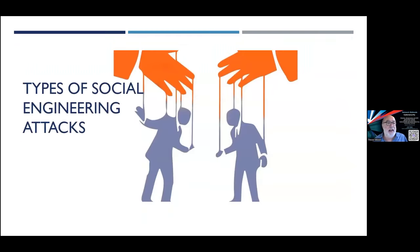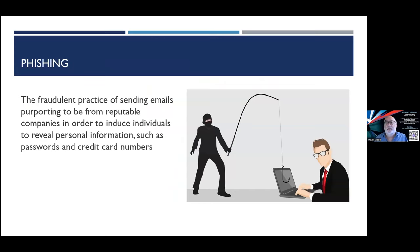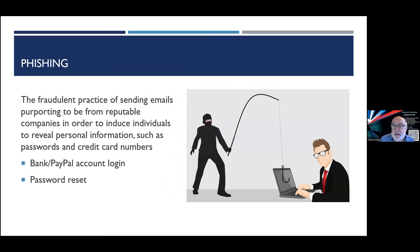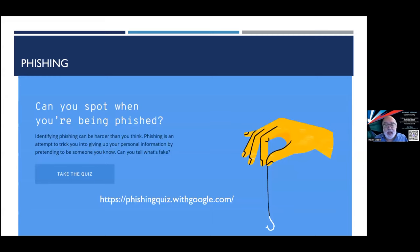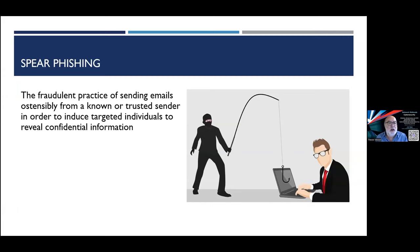Given all that, let's look at types of social engineering attacks, starting with online ones. First is phishing — the fraudulent practice of sending emails purporting to be from reputable companies in order to get individuals to reveal personal information such as passwords and credit card details. They might try to get your bank or PayPal login, perhaps by sending a fake password reset. Google has put together a short quiz where you can test how well you spot fake versus real emails.